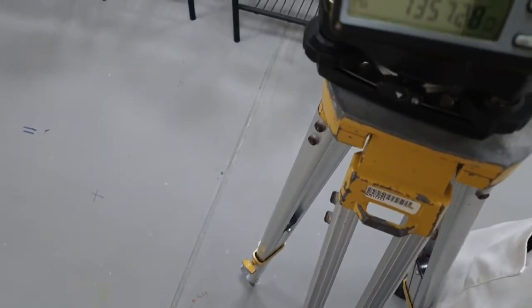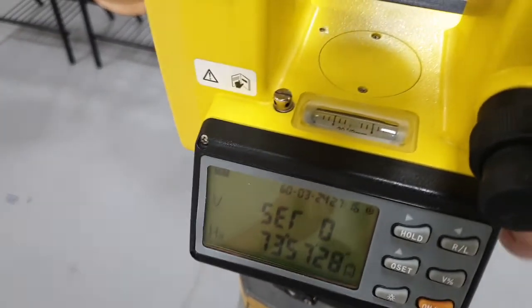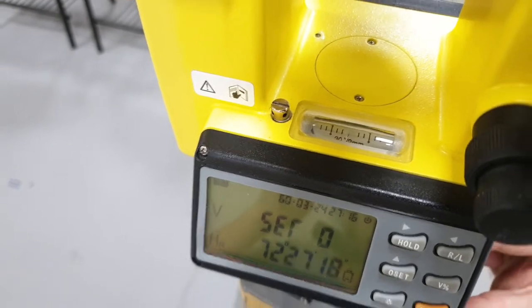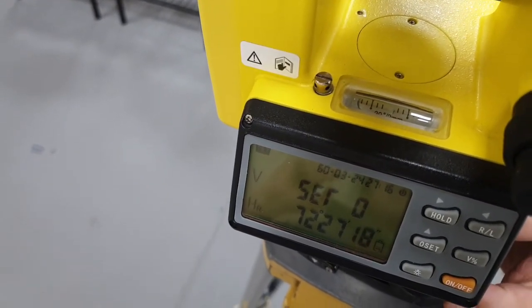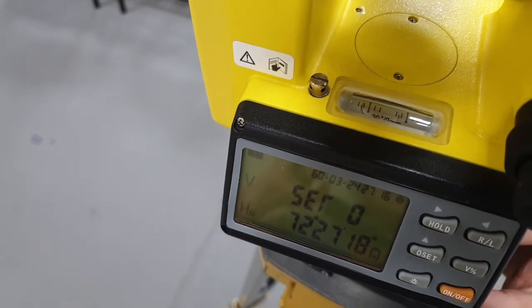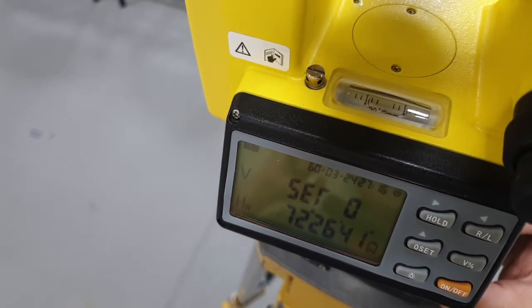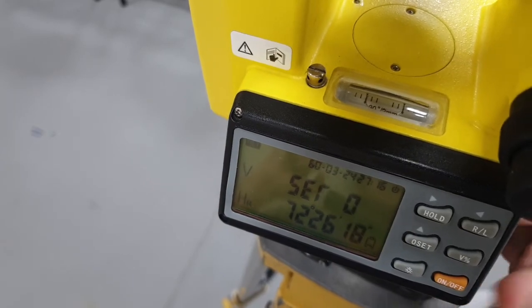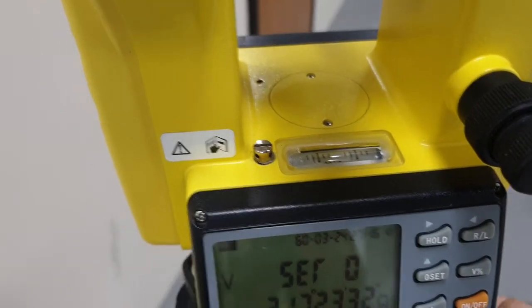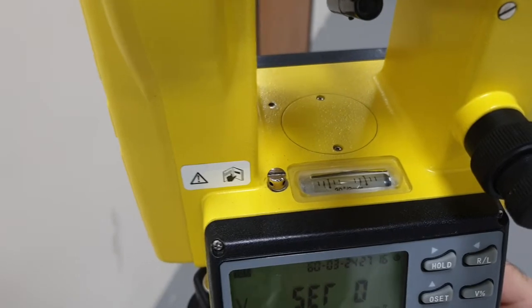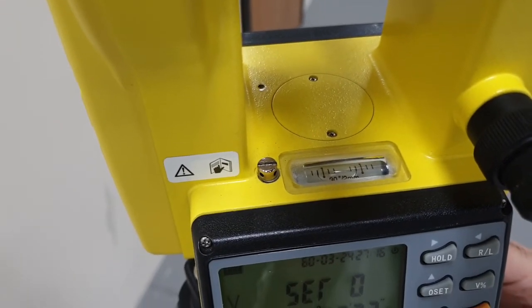We level this slowly to the center. Now we go again to the third side and check the center. It's almost in the center, it needs minor adjustment.